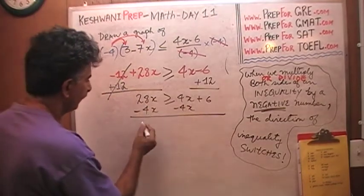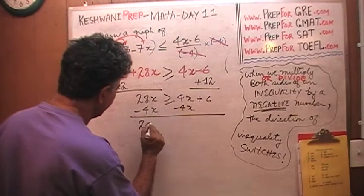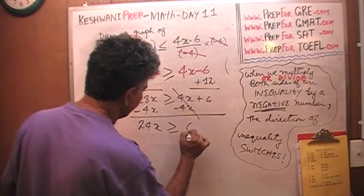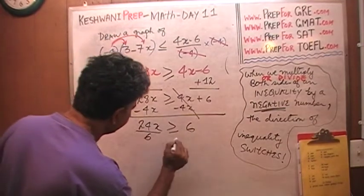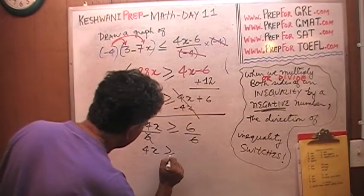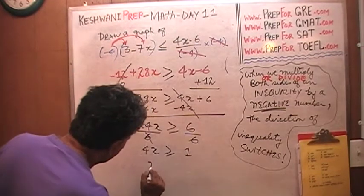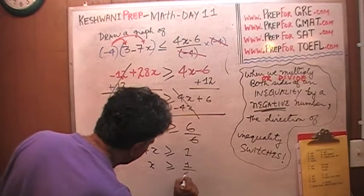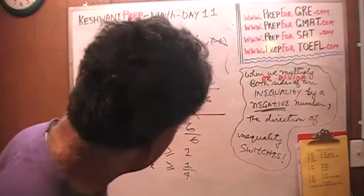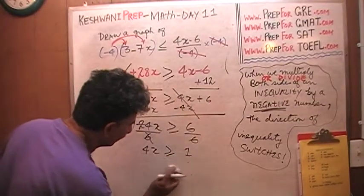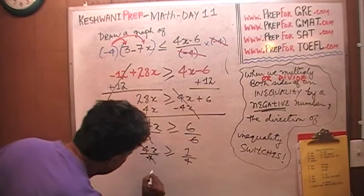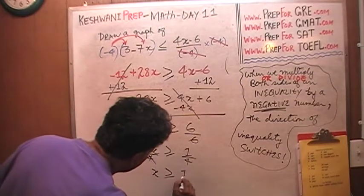So 28x minus 4x gives us 24x is greater than or equal to 6. Divide both sides by 6 — we get 4x is greater than or equal to 1. Then divide both sides by 4, and x is greater than or equal to one quarter.